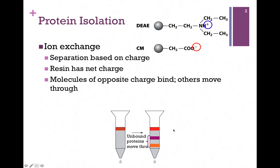Let's say we're using carboxymethyl, and our resin has a net negative charge, and our protein that we're trying to separate has a net positive charge. It will bind to the column, and that's represented by the red band here, whereas any other proteins that have either the same negative charge or no net charge will move through the column.